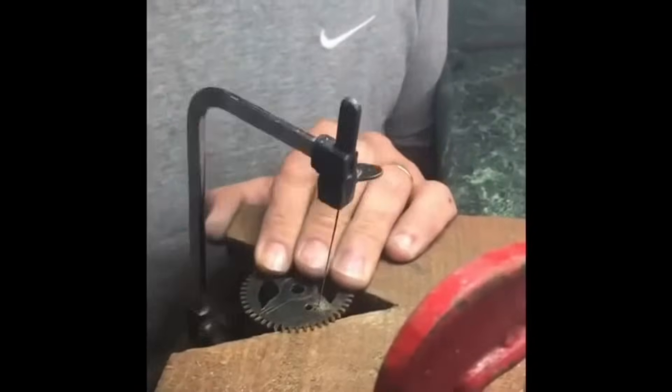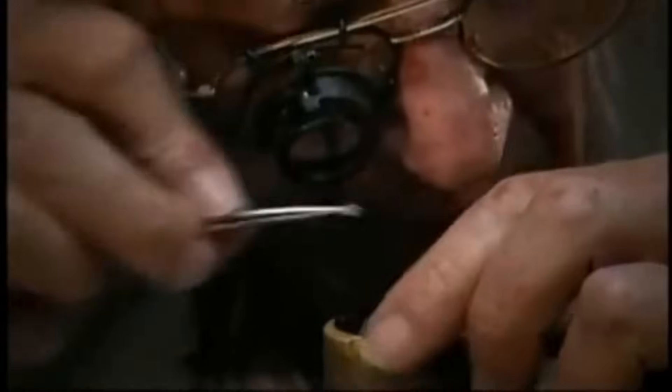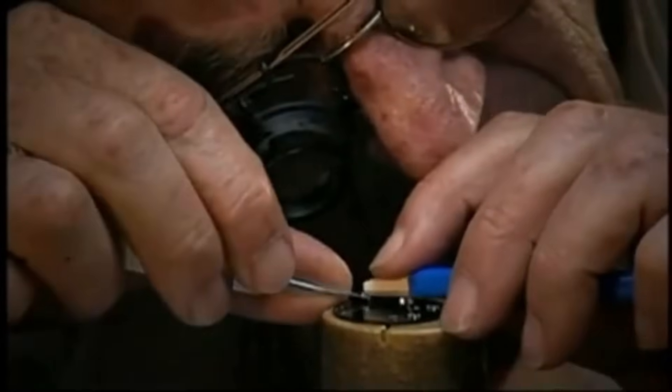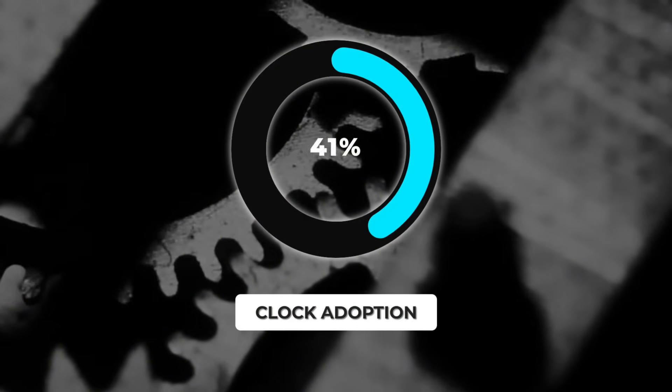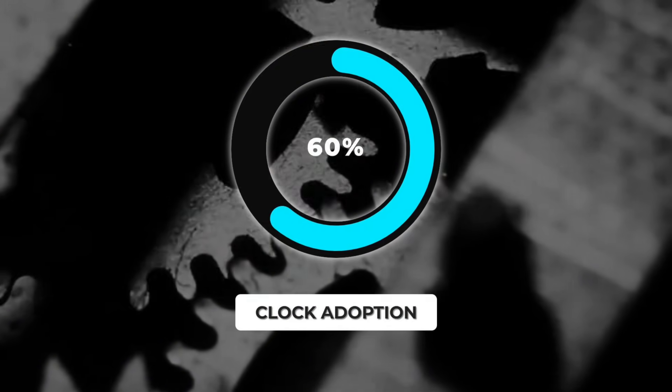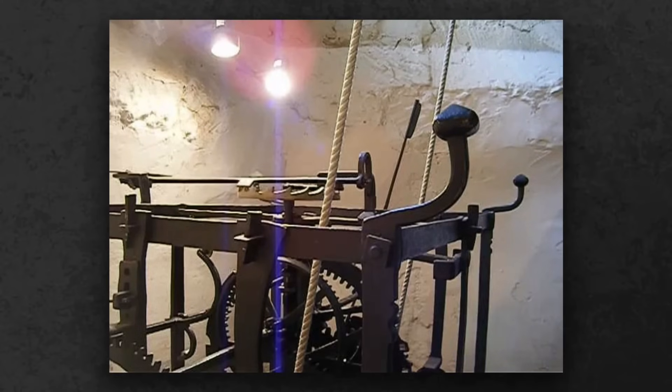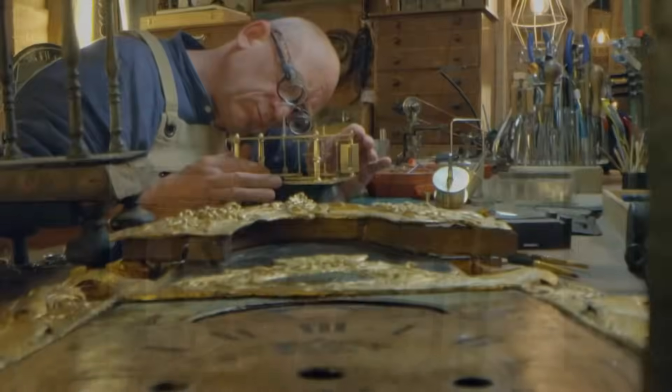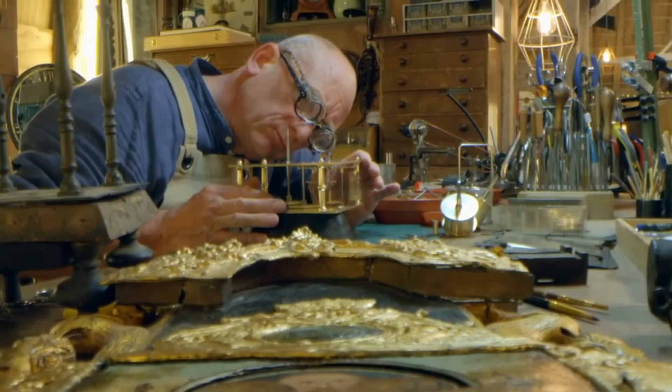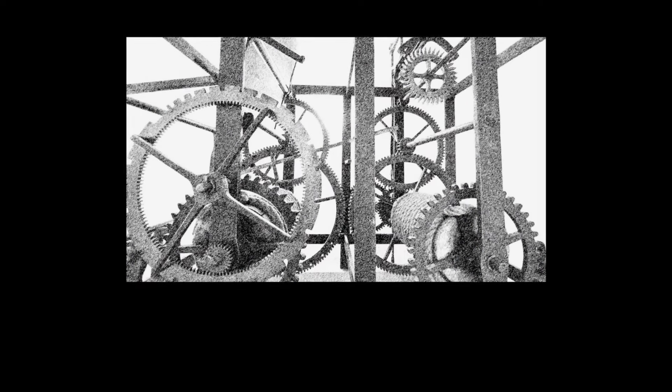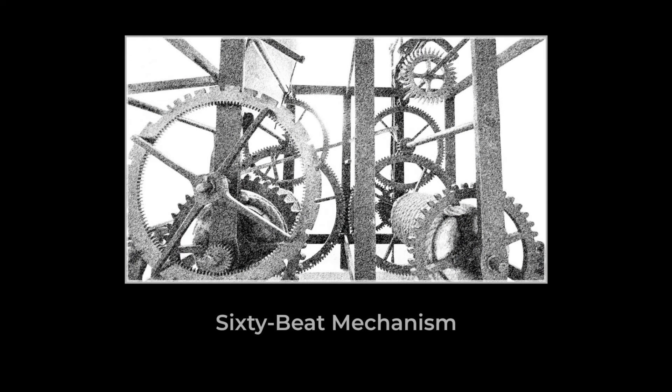The choice of 60 wasn't dictated by the gears themselves, but by the need for a system that everyone could use, one that made fractions easy and time predictable. As clocks spread, the 60 base structure became the heartbeat of cities and villages. What began as an astronomer's convenience became a public rhythm, locking the ancient number 60 into every tick and tock.